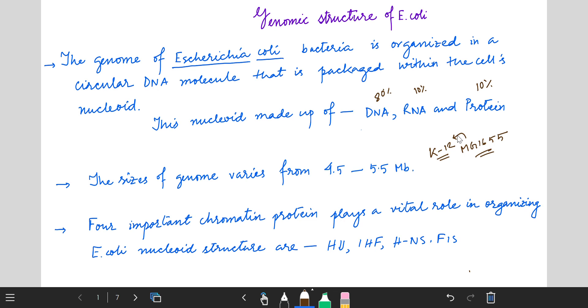After studying, it was observed that 12 chromatin proteins were found in E. coli. Among them, 5 exist in abundant concentration of 20,000 copies per cell and 4 of them are well characterized. These 4 are HU, IHF, HNS and FIS protein.